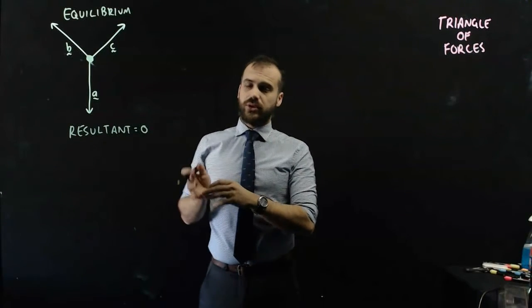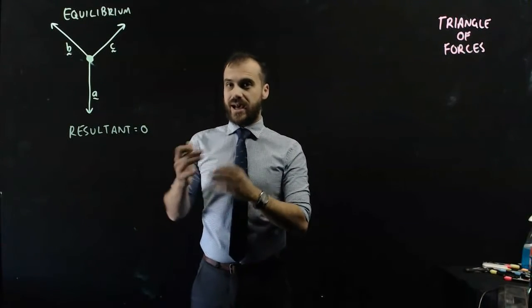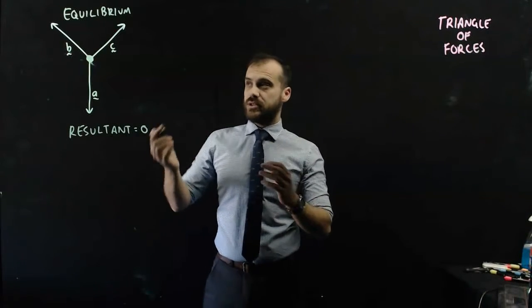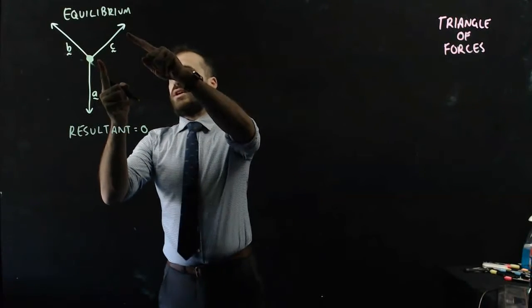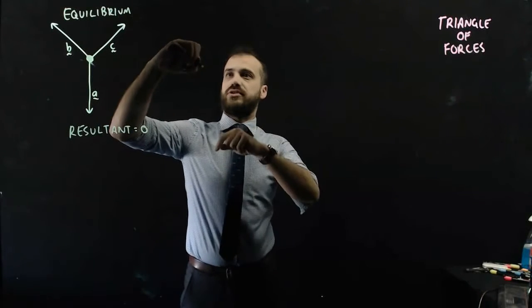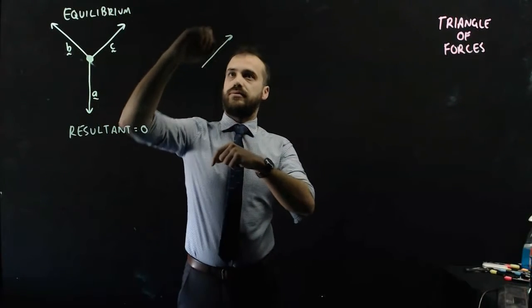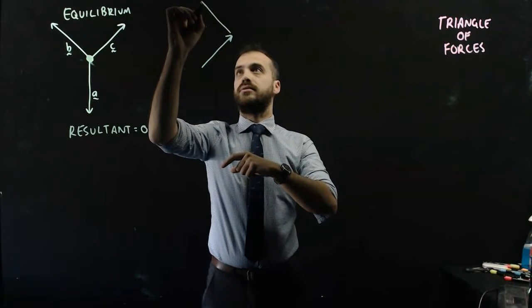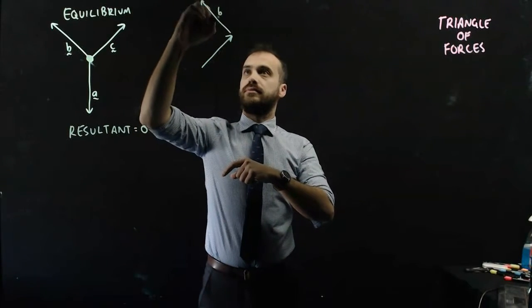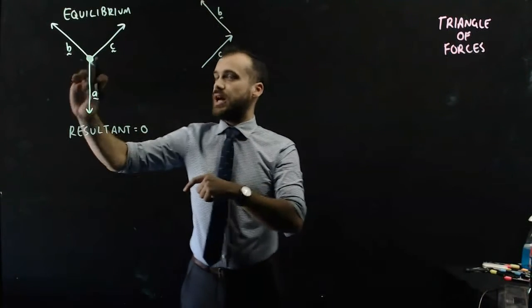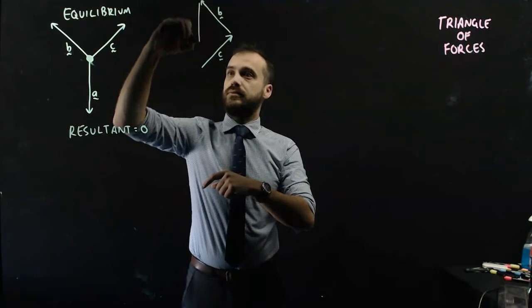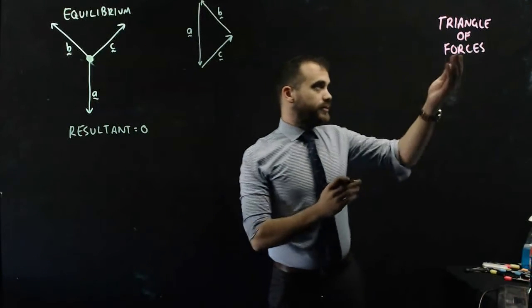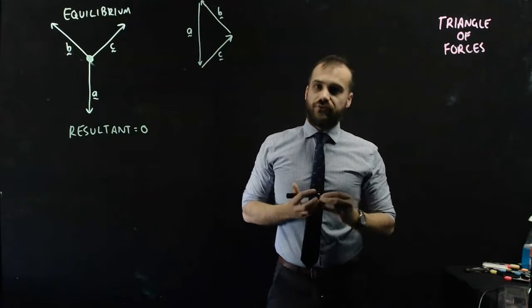Graphically, what does it look like if three vectors are added together and it's equal to zero? Well, you get this great thing here. I'm going to take vector C and just move it over here. Take vector B and move it over to here. Take vector A and move it to here. And you get this great thing, the triangle of forces.